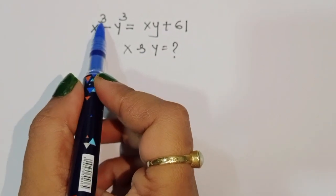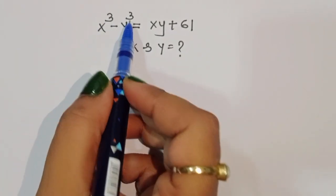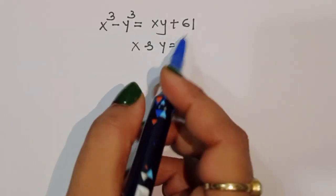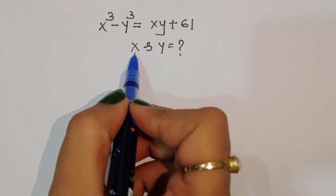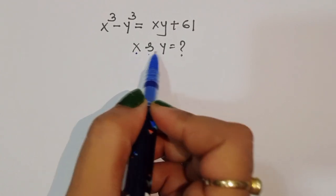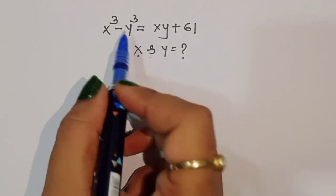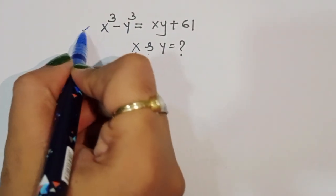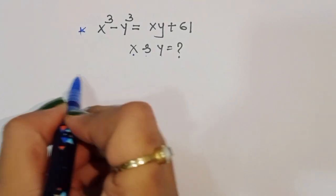The question is: given x³ - y³ = xy + 61, we have to find out the value of x and y. Let's see the solution.